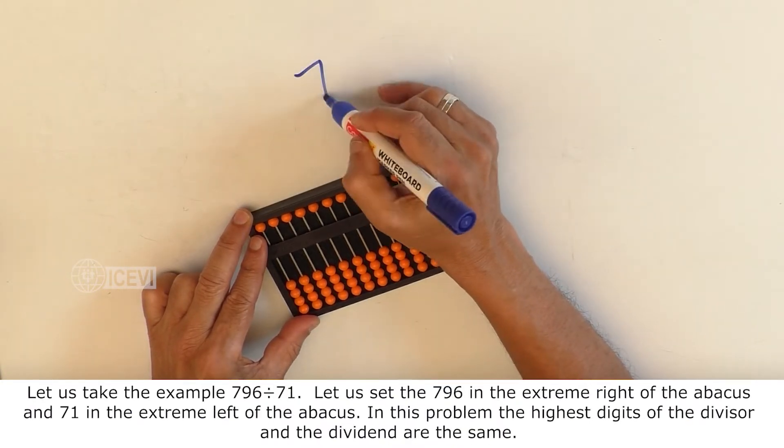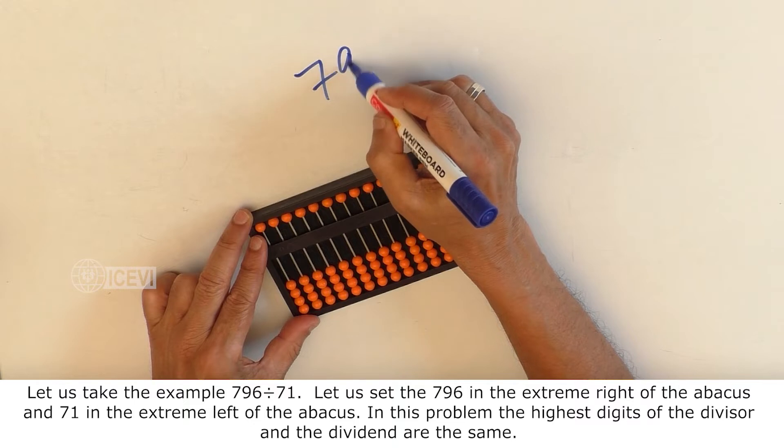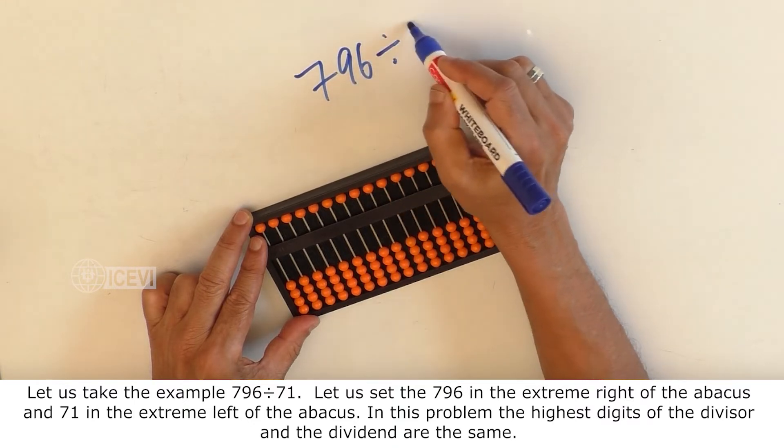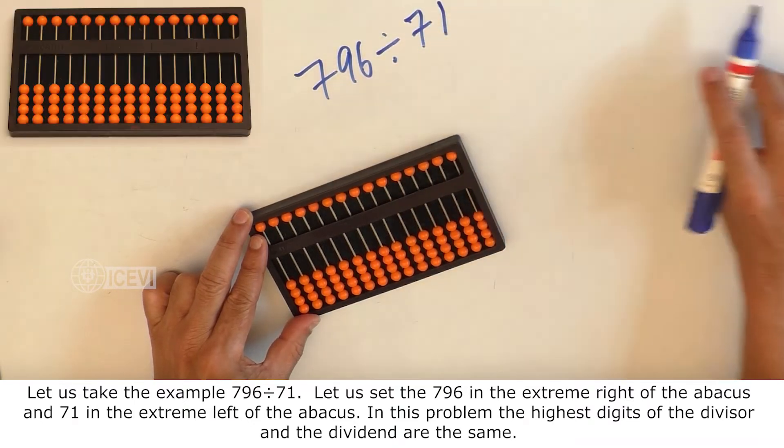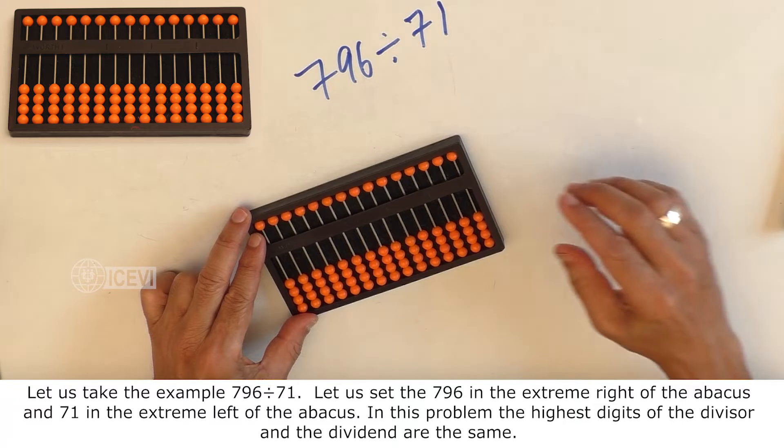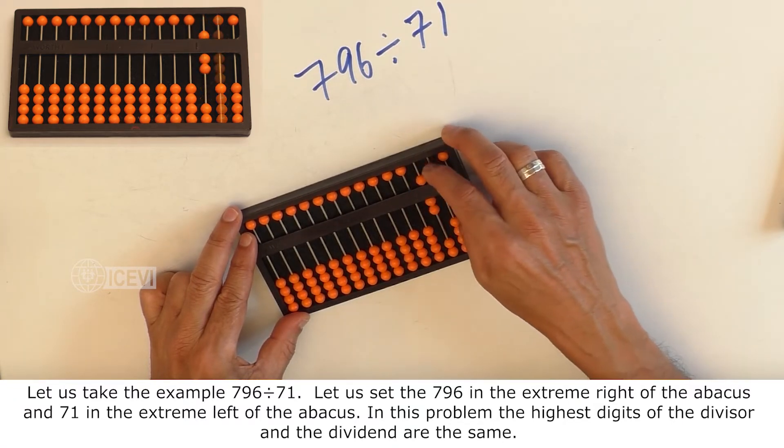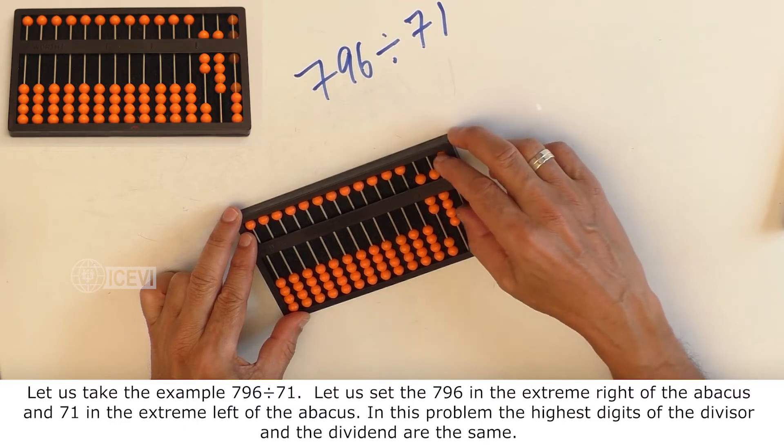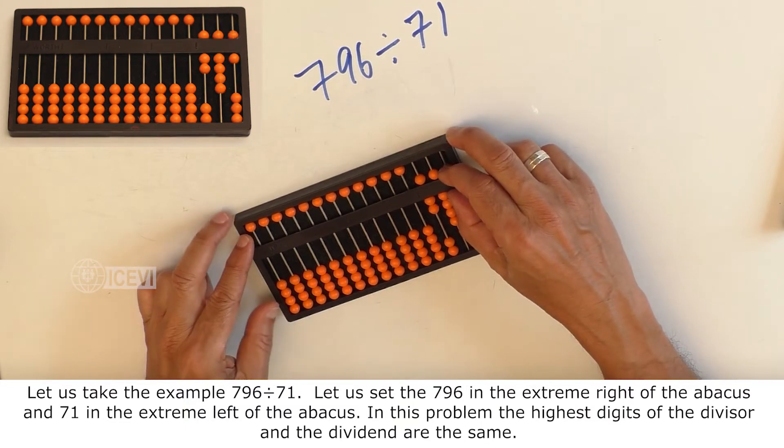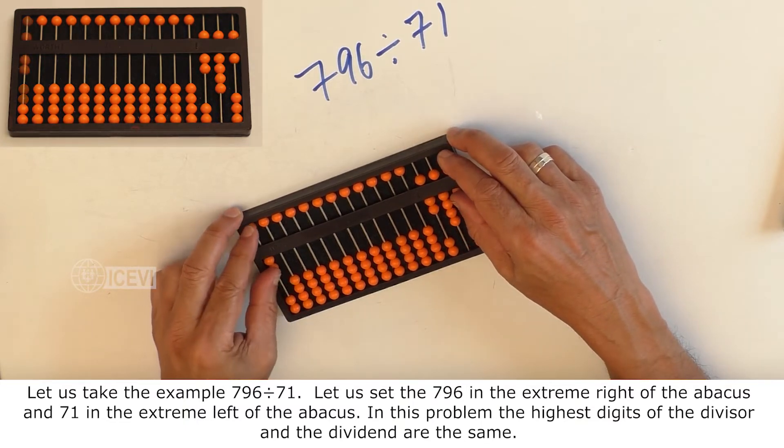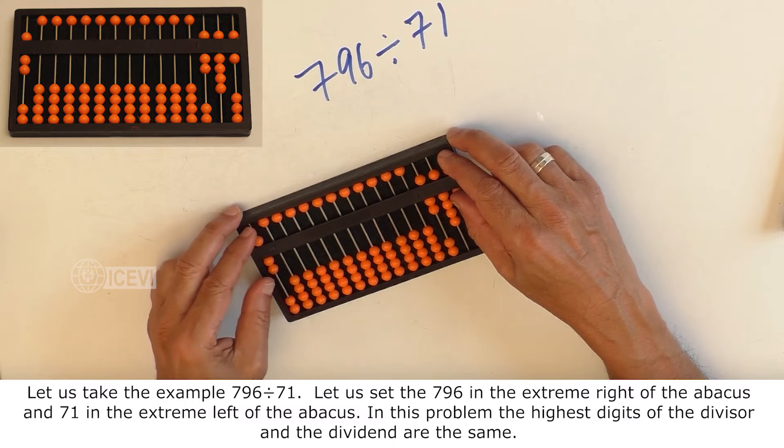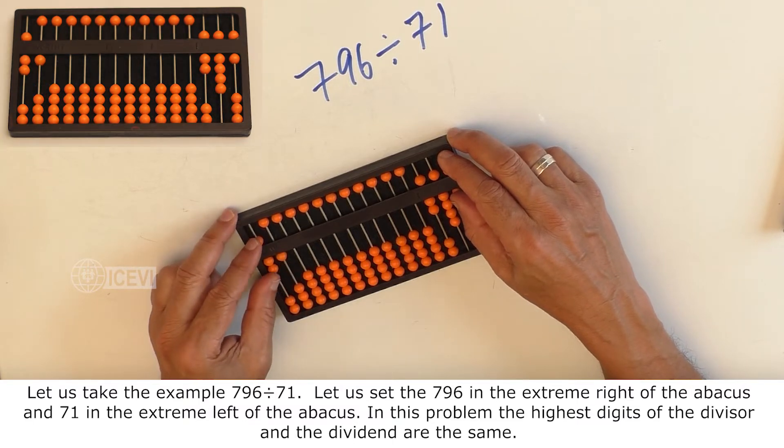Let us take the example 796 divided by 71. Let us set the 796 in the extreme right of the abacus and 71 in the extreme left of the abacus.